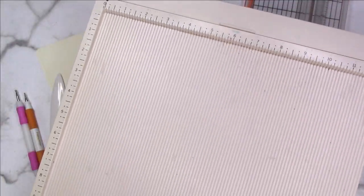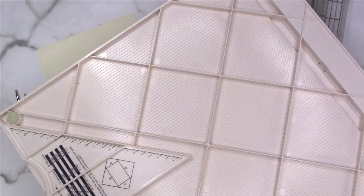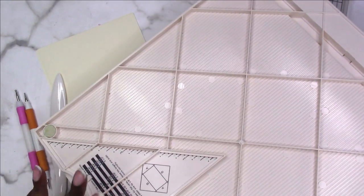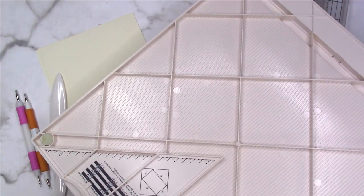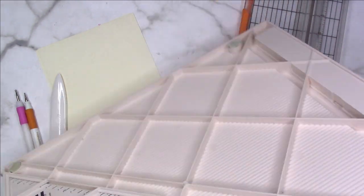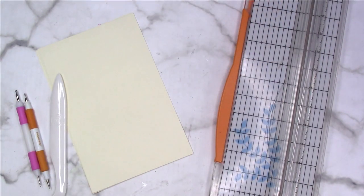This is the Martha Stewart scoreboard. Not everybody has this. It also has an envelope tool on the back that you can use to make envelopes, but we're not going to be using that.